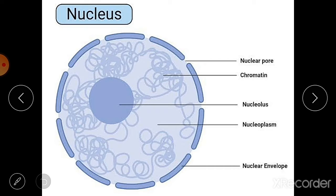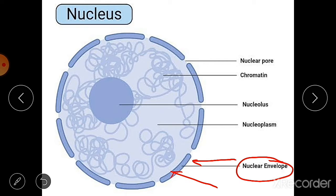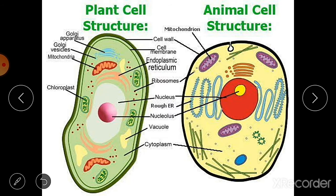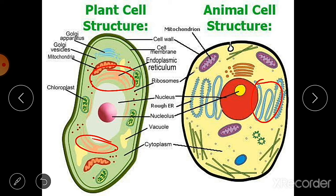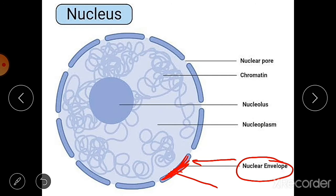The nucleus has two membranes — the outer one and the inner one. These two nuclear membranes form the nuclear envelope. This nuclear envelope encloses a space between the two membranes, and this space is connected to the system of membranes called the endoplasmic reticulum. The nuclear envelope is thus connected to the endoplasmic reticulum. This nuclear membrane also has many pores called nuclear pores.